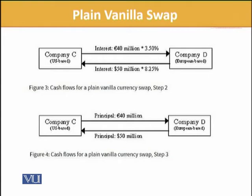Company C pays 3.5% on 40 million euros to Company D. Company D pays 8.25% on 50 million dollars to Company C. This happens every year throughout the 5-year term. When the 5 years are complete, they re-exchange the principals: the party that took euros returns 40 million euros, and the party that took dollars returns the total dollar amount. This concludes the transaction, capturing the 5-year period and safeguarding against currency risk.